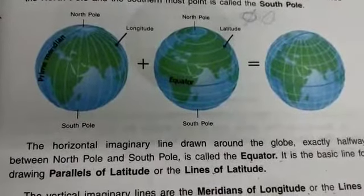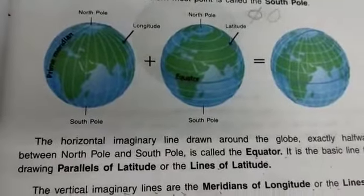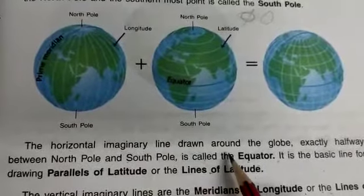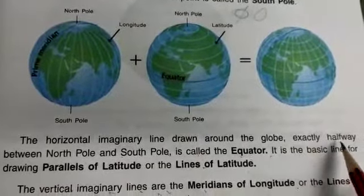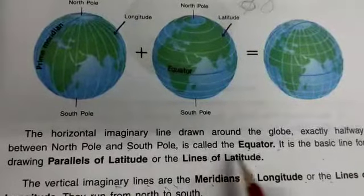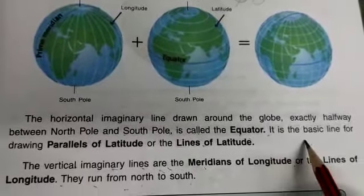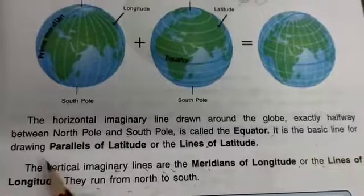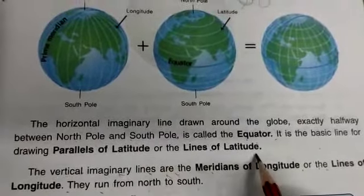After that, I explained about the equator and parallels of latitude. The equator is a horizontal imaginary line drawn around the globe exactly halfway between the North Pole and the South Pole. It is the basic line for drawing parallels of latitudes, also called lines of latitude.